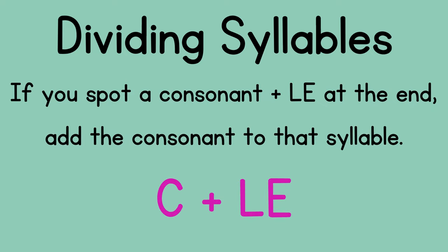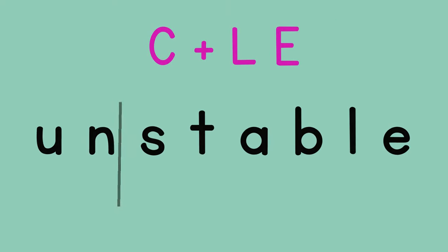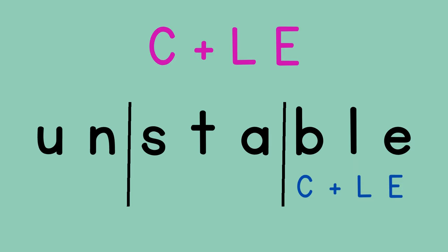One more rule: if you spot a consonant L-E at the end, add the consonant to that syllable. In 'unstable,' you know that B should be added with the L-E at the end.